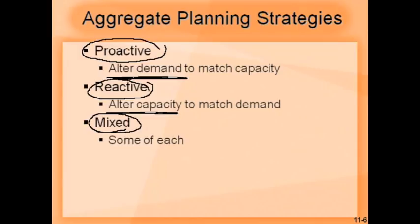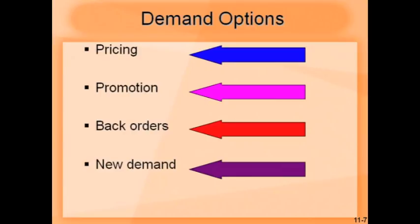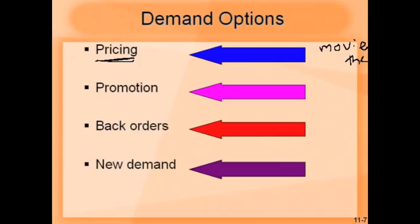For proactive strategies, four options are listed. The first is pricing — shifting demand from a peak period to an off-peak period. For example, movie theaters cannot easily change their capacity on a day-to-day basis, so the reactive option is ruled out. Instead, they try to change the demand pattern using pricing strategies, such as offering discounts for matinee showings or periods where fewer people come, so that some peak demand is shifted to those periods.